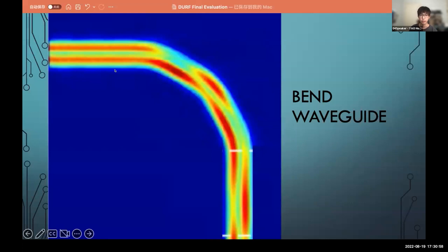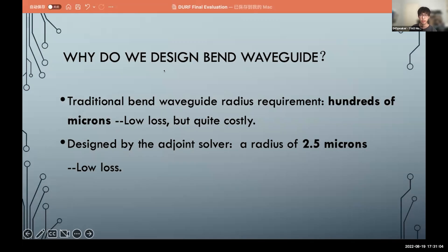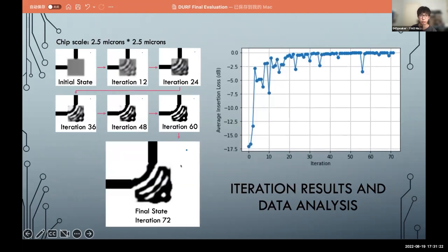Here the bend waveguide is used to change the direction of the waveguide. And why do we design bend waveguide? Because the traditional bend waveguide requires hundreds of microns of radius, it's very costly. But if we design it by the adjoint solver and inverse design, the radius is only 2.5 microns, which is much smaller than the traditional bend waveguide. And you can see the result here, we use 2.5 by 2.5 microns design field and we get the iteration results, and also the final insertion loss is very close to zero. It's very effective.